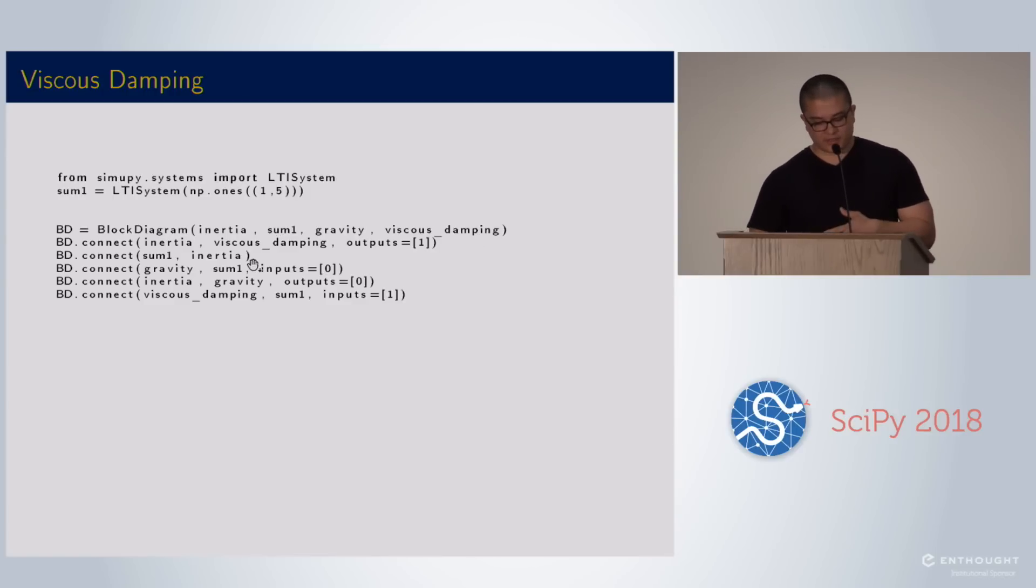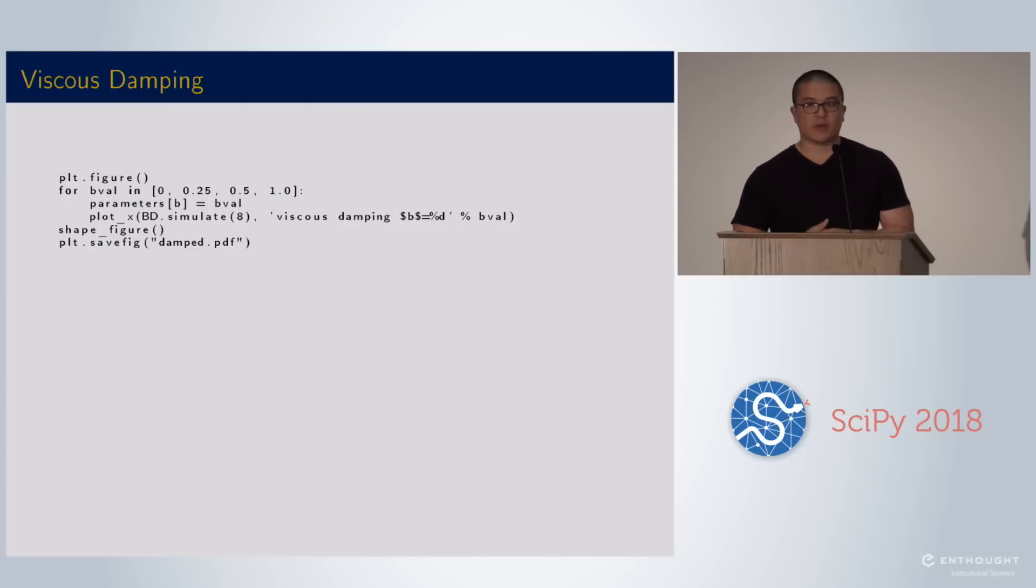Then I can do all of the similar connections. I connect the velocity to the viscous damping because it's a force that depends on the velocity. I connect the summer to the inertia. So the sum of all the forces goes to the inertia. Then I can connect the gravity term to the summer and the position back to the gravity.